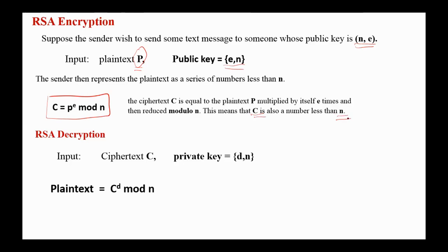In decryption, the input is the ciphertext and the private key. And the plaintext is computed according to this formula: C to the power d mod n. As you see here, the sender has only the public key and encrypts the message using the public key of the receiver. And the receiver can decrypt the message using his own private key.